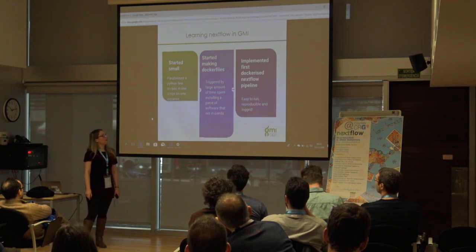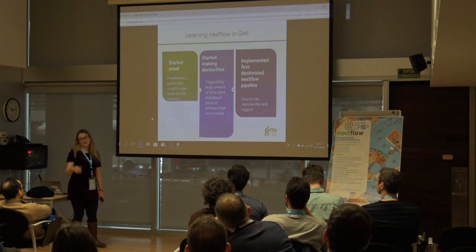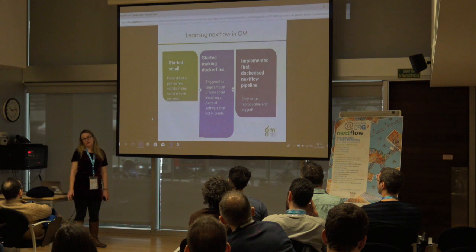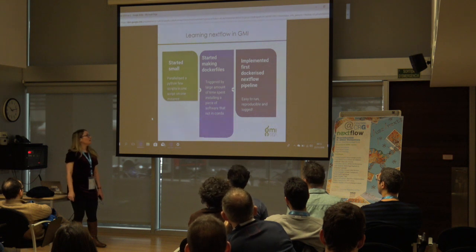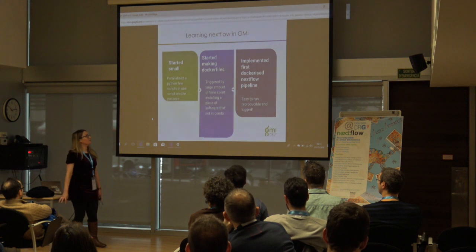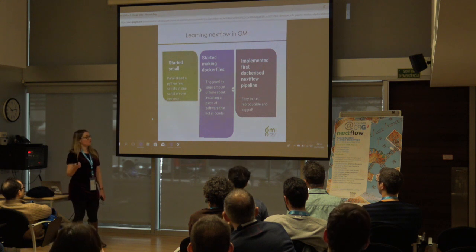How I started at GMI: I took some scripts I already had and parallelized them on a single machine, running lots of samples through them. Then I started making Dockerfiles, which was triggered by frustration — I was trying a CNV caller that wasn't on Conda and spent about five hours trying to install it. I just didn't want to go through that again, especially if I switched machines. So I learned Docker and implemented that CNV caller in Nextflow using the Docker image.